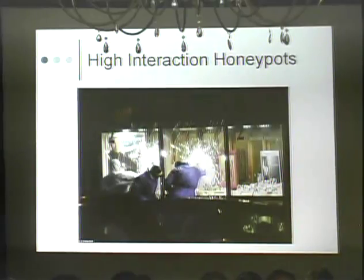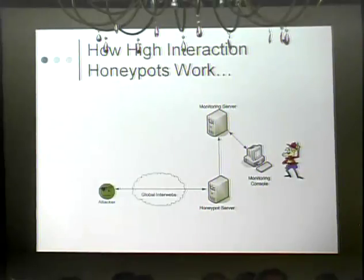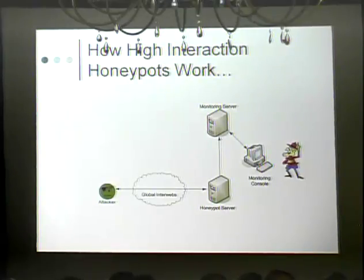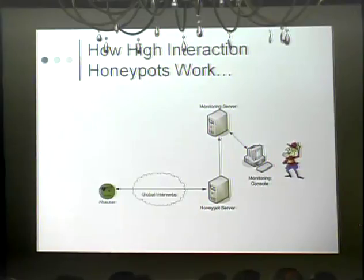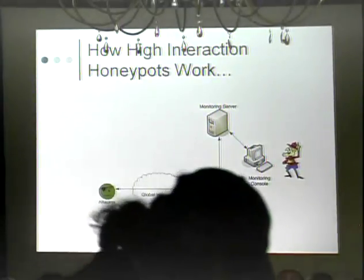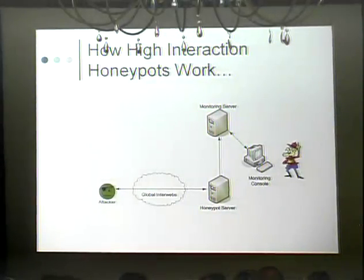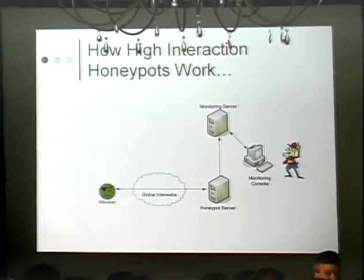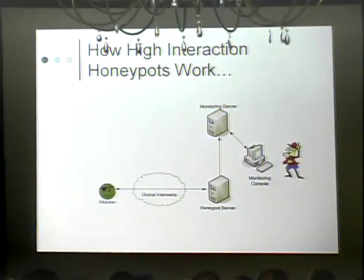With a high-interaction honeypot, the evil attacker — you can tell he's evil because he's wearing an eye patch — attacks the honeypot server. It's a real computer and he's going to compromise it and do evil things, but what he doesn't know is that it's relaying everything he's doing to a monitoring server. That monitoring server can run Snort, an IDS, all kinds of things that sniff and track packets. However, if he sets up Secure Shell and starts running encryption, you won't be able to see exactly what he's doing. There's a program called Sebek (S-E-B-E-K) that will allow you to see exactly what he's doing at the console and replay it back.